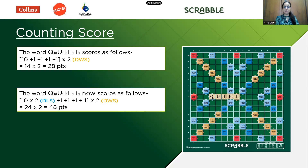The points for this word now will be 10 multiplied by 2 for Q because Q is on a double letter score — that's 20 — plus 1 for U, plus 1 for I, plus 1 for E, and 1 for T. That gives you a total of 24 points. And because T is on a double word score, this move will get you 48 points.